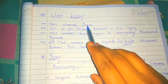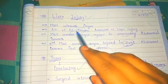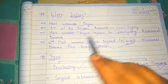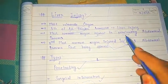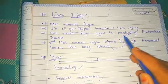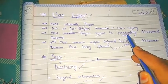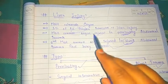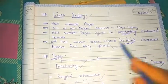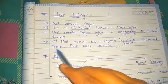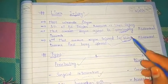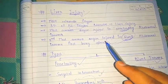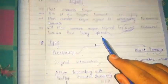What is the most vulnerable organ? 5% of all trauma admissions are liver injuries. The liver is the most common organ injured in penetrating abdominal trauma. In blunt abdominal trauma, it is the second most common organ injured, because in blunt trauma the spleen is the most commonly injured organ.